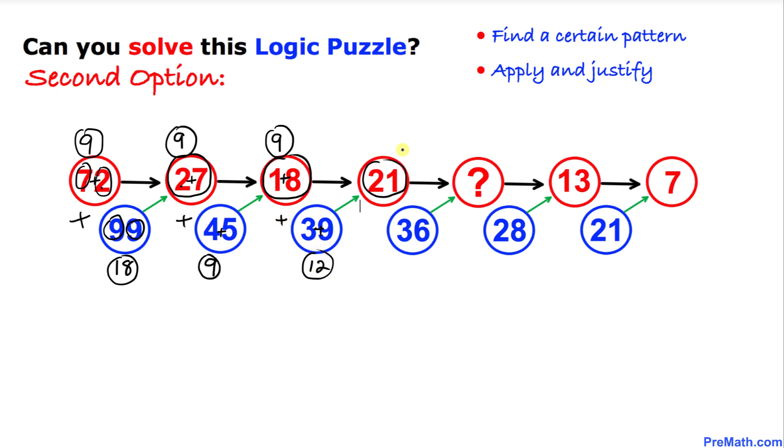Now 21 could be written as 2 plus 1 is 3, and 3 plus 6 is 9. So 3 plus 9 is going to give us 12. So at this question mark, this number turns out to be 12. Let's keep moving forward. 12 could be written as 1 plus 2, which means this number becomes 3, and 2 plus 8 is 10.